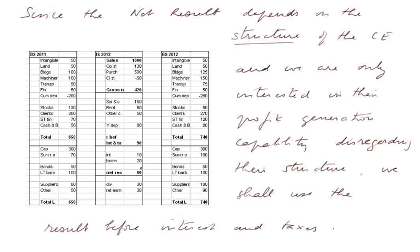First of all, since the net result of 60 million depends on the structure of the liabilities of the capital employed, whether we have more equity and less debt or more debt and less equity will produce a different net result. And since we are interested in the profit generation capability of the firm disregarding the structure of the capital employed, rather than looking at the net result, we shall look at the result after the operating charges, the operating result, also called result before interest and taxes.